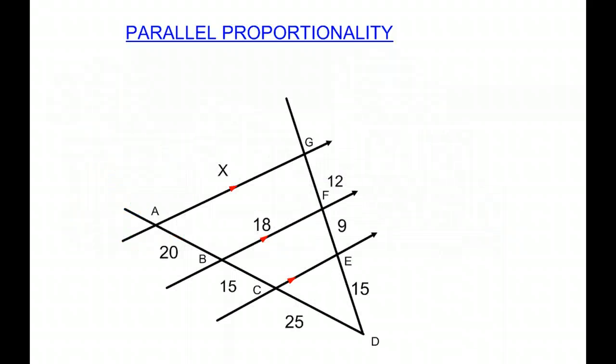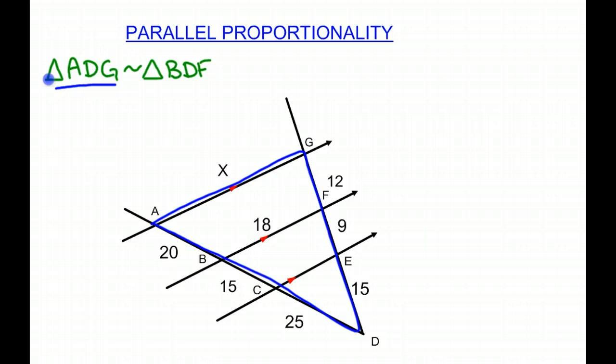Here's another example. The only difference is we're actually trying to find that segment of the transversal rather than the proportional parallel sides. So we can't compare proportional sides. We actually have to do triangles. So here we have triangle ADG is similar to triangle BDF. Okay, so we can compare those sides.